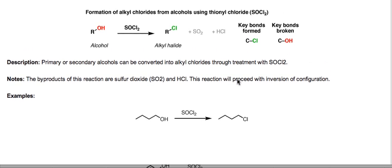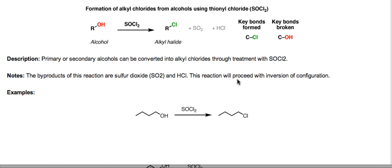Let's walk through some simple examples of this reagent. Here's a straightforward one: when you start with 1-butanol and treat it with thionyl chloride, you end up with 1-chlorobutane. So we've substituted OH for Cl. The byproducts are SO2 and HCl, though they're not always drawn.